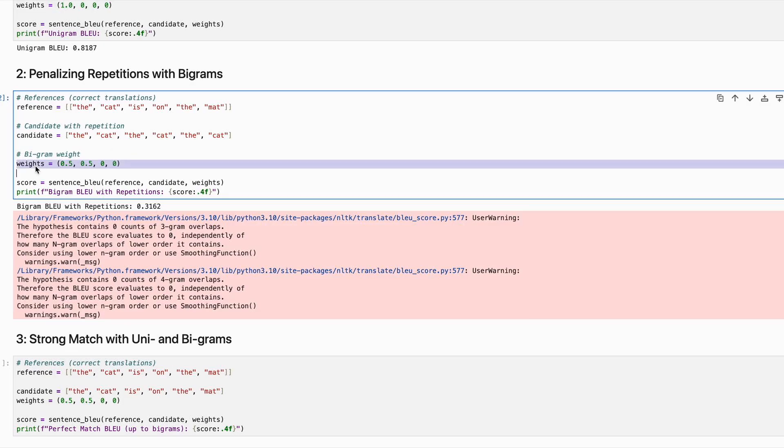So this also explains what is this weightage which is present. And in this sentence, as you can see, 'the cat is on the mat' and 'the cat the cat the cat', so despite having so many repeated occurrences, as you can see, it clips the matches to only two. If you see, they would be matched, the remaining ones won't be considered.